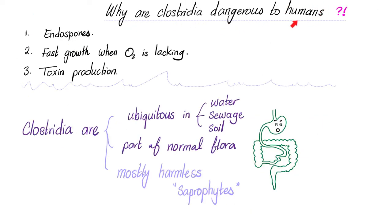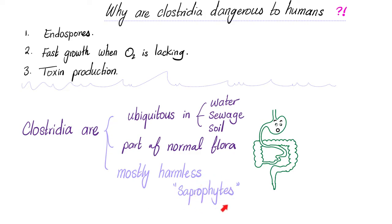Why are Clostridia such a big deal to human beings? Because they can lead to pathology — thanks to their endospores, their ability to survive without oxygen, and their capacity to produce toxins such as tetanus toxin and botulinum toxin. Clostridia are ubiquitous — found everywhere in water, sewage, and soil, and they are part of your normal gut flora. They are mostly harmless saprophytes — organisms that live upon dead, decaying matter — but they can turn against you.